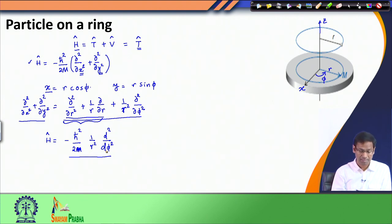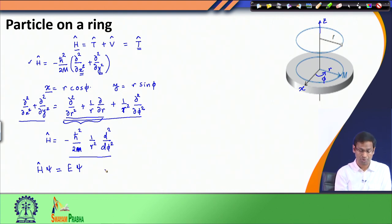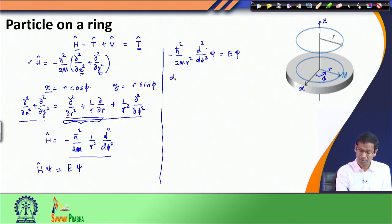Now that we have written down the Hamiltonian, we would like to solve this problem quantum mechanically. To do this, I write down the corresponding Schrödinger equation. Suppose psi is the eigenfunction with an eigenvalue E — I am writing down the Schrödinger equation corresponding to this Hamiltonian operator.